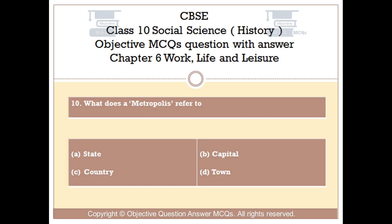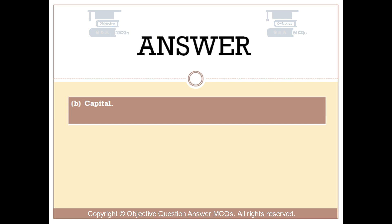Question number 10: What does a metropolis refer to? Option A: State. Option B: Capital. Option C: Country. Option D: Town. The right answer is Option B: Capital.